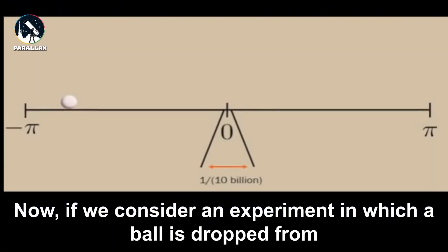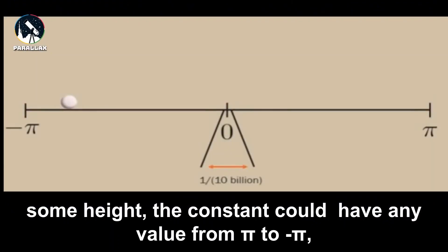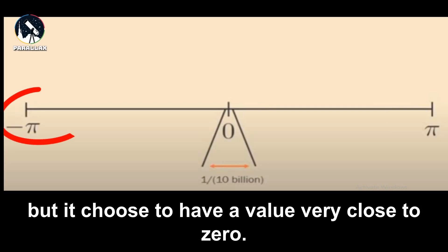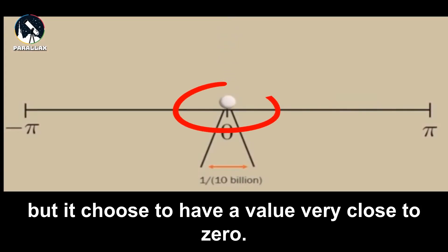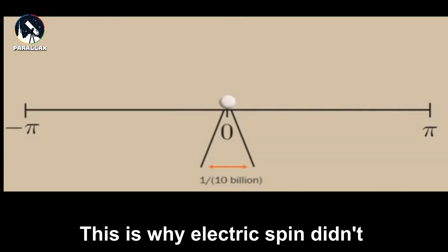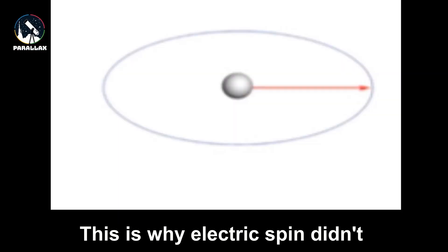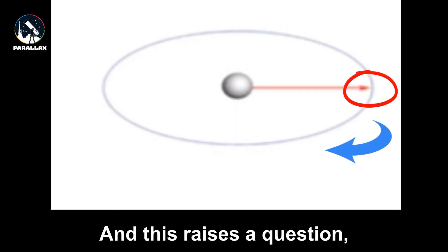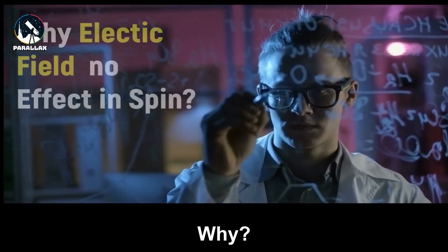Now let us consider an experiment in which a ball is dropped from some height. The constant theta could have any value from π to -π, but it chooses to have a value very close to zero. This is why electric spin does not show any rotation. And this raises a question: why?